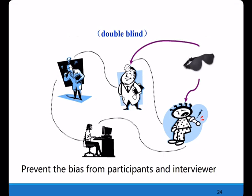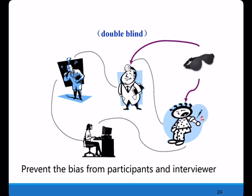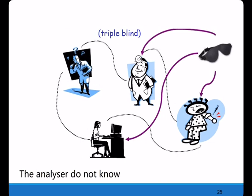For example, if evaluators are aware of the patient's assigned treatment, they might show different attitudes toward patients in different treatment groups. In a triple-blind trial, the patient's treatment assignment is unknown to the patient, to the evaluator, and even to the data analyst.